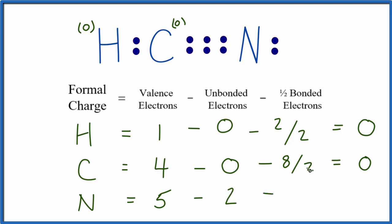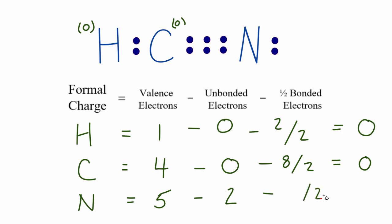We'll subtract one-half of the bonded, and that's two, four, six. So five minus two minus three, that gives us zero as well. The formal charge on nitrogen is zero.